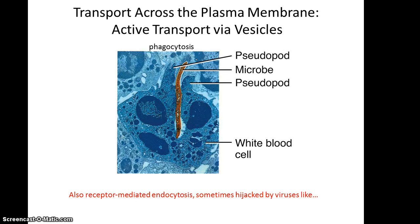Probably the most well-known form of endocytosis is phagocytosis. This is when an immune cell, such as a white blood cell, engulfs an invading microbe to protect us from the invader. It forms pseudopods that surround the microbe, bring it into the cell, and then that microbe is basically digested. It's also worth pointing out that some organisms, such as viruses, have found ways to hijack the endocytosis process to get themselves brought into a cell in order to infect it.